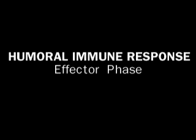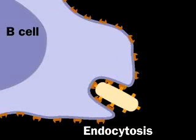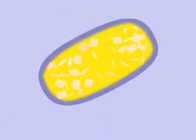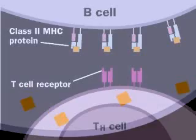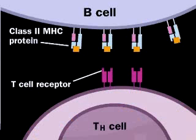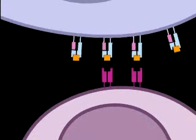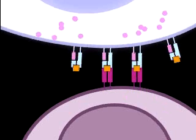In the effector phase of the humoral immune response, activated helper T cells help B cells develop into antibody-producing plasma cells. Consider a B cell which has encountered the same antigen as was recognized by the original helper T cell. The B cell processes the antigen and class II MHC proteins transport the pieces for display on the B cell surface, making the B cell an antigen-presenting cell. If an activated helper T cell has the same specificity as the B cell, it can dock with the B cell and assist it by releasing cytokines.